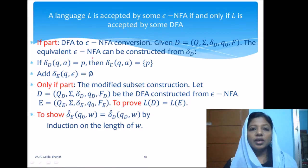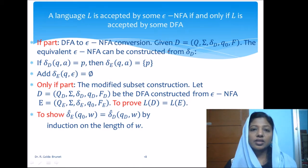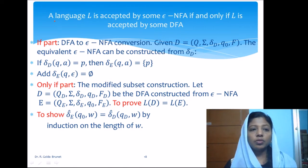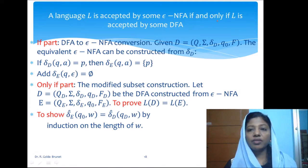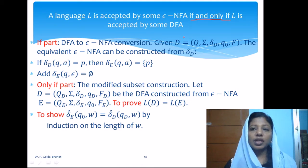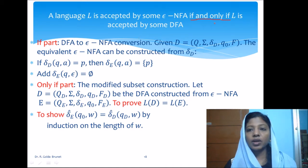Now we will establish that the DFA constructed from epsilon-NFA using the modified subset construction procedure is indeed correct. To show that, we have to prove the theorem: the language L is accepted by some epsilon-NFA if and only if L is accepted by some DFA. Since this uses 'if and only if', we have to prove both the if part and the only if part.